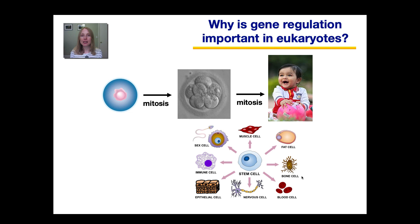A lot of it has to do with gene regulation. Specific genes have to get turned on or turned off to instruct the cell — hey you, you're supposed to be a muscle cell, you need to become a fat cell versus a bone cell or a blood cell, and so on.